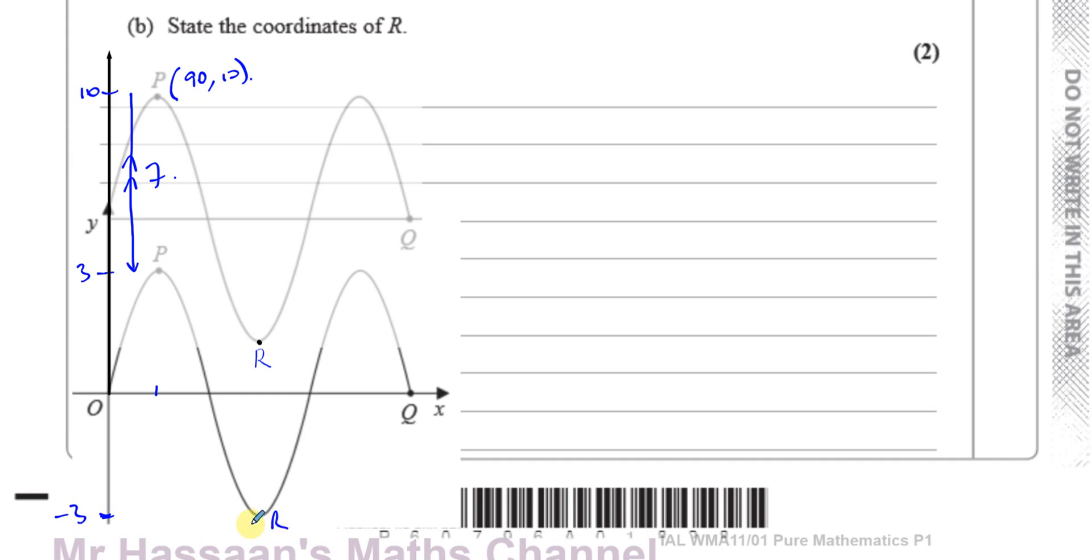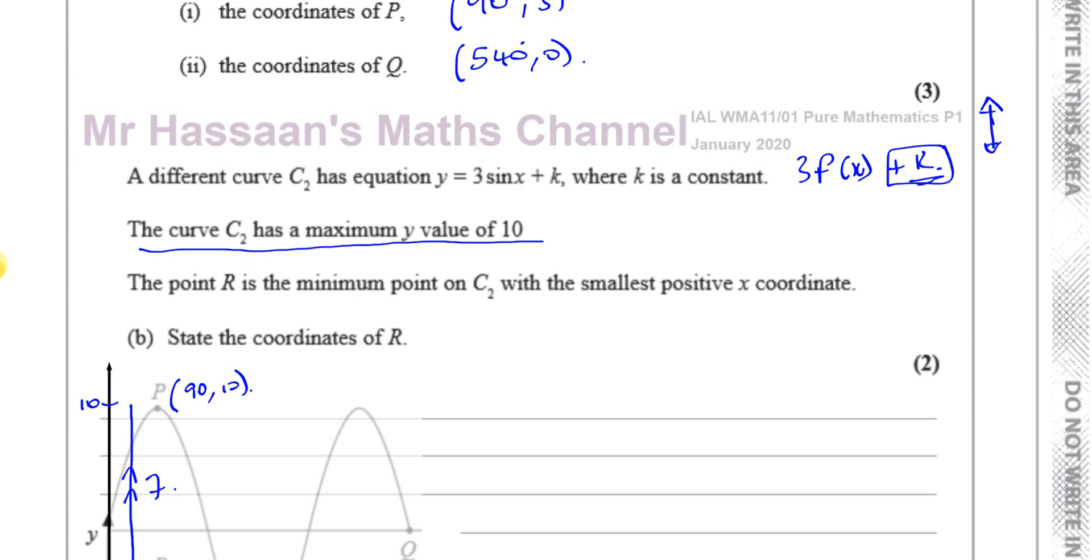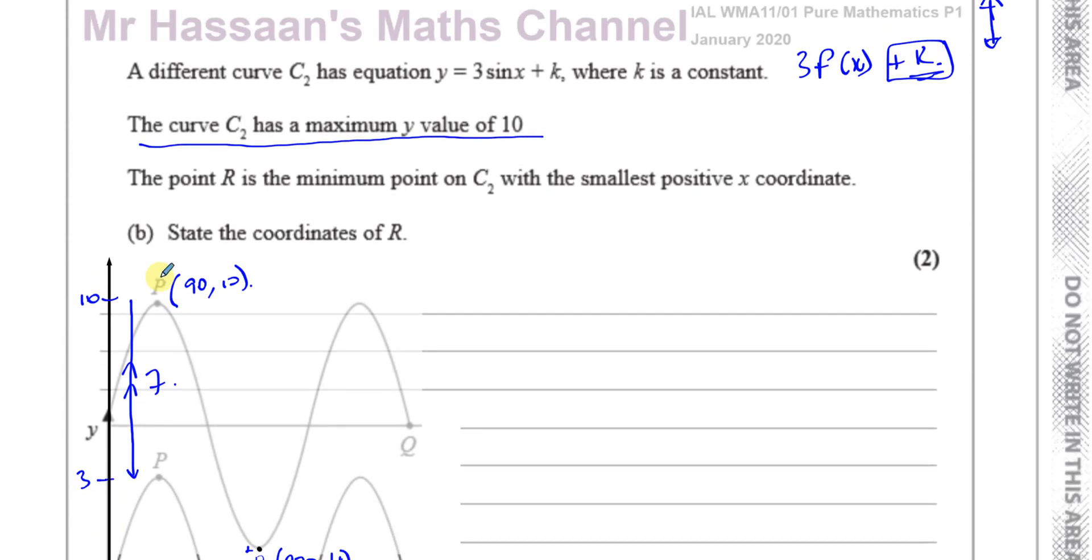The minimum point which was here before at (270, -3), its new position is going to be moved up 7 spaces as well. Everything is moved up by the same amount because you've added k, and k must be 7. So that must be (270, -3 + 7) which is (270, 4). So k equals 7, and therefore the coordinates of R are going to be (270, 4).